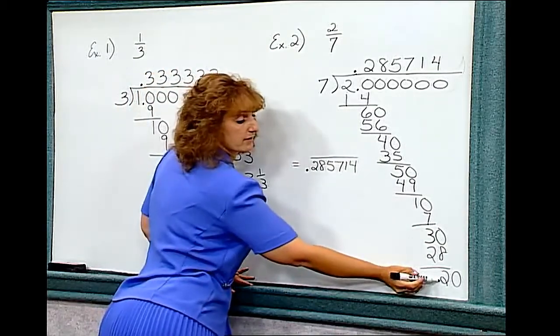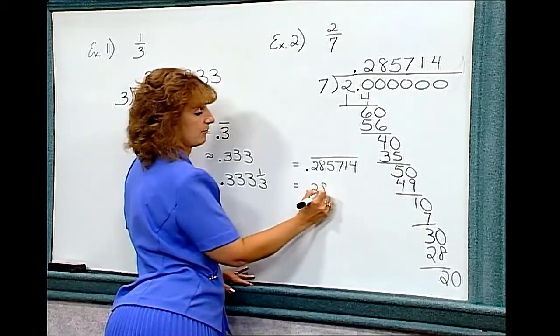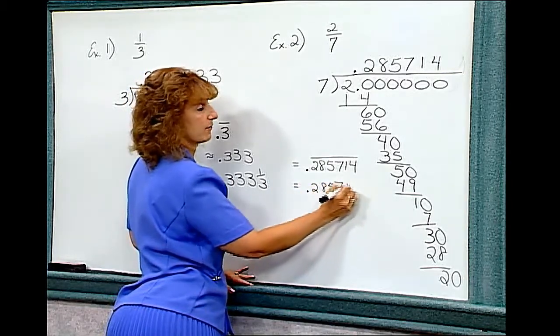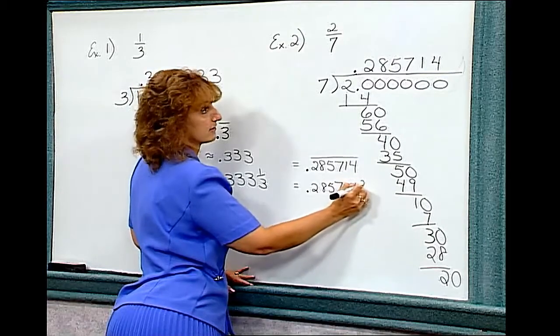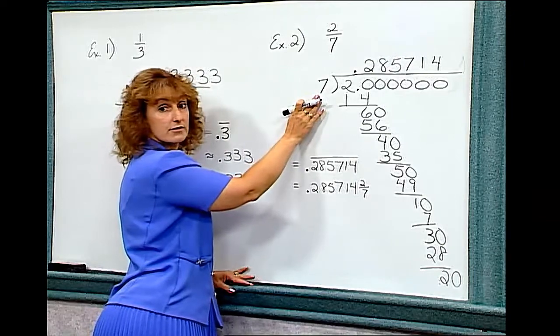If I was going to bring this two remainder up, I could say this equals point two eight five seven one four and two-sevenths—two from the remainder, seven from the divisor.